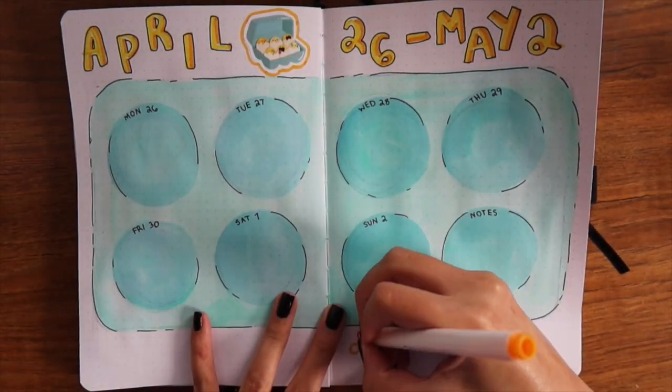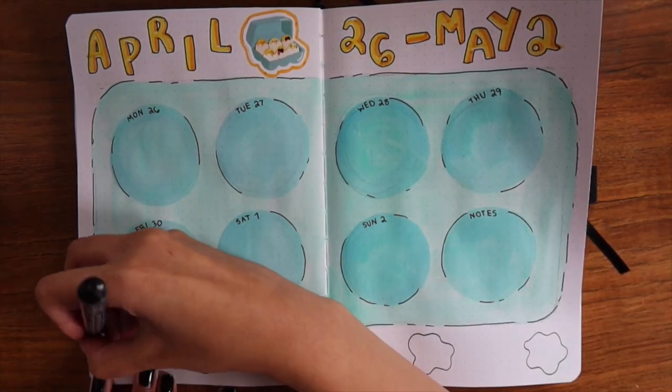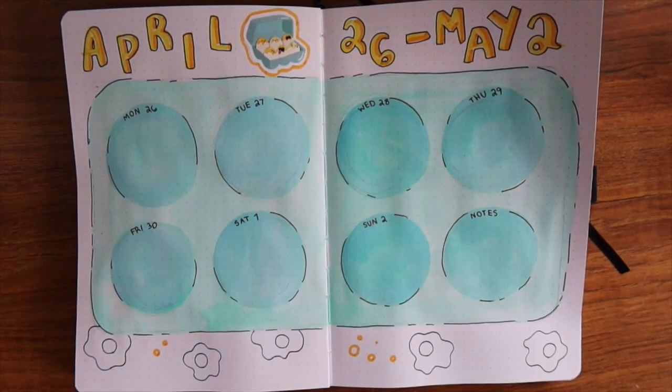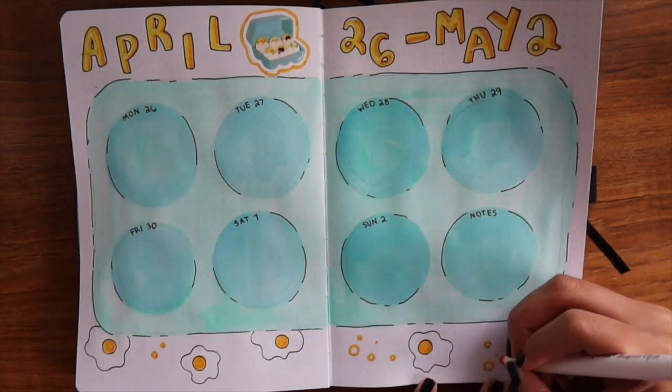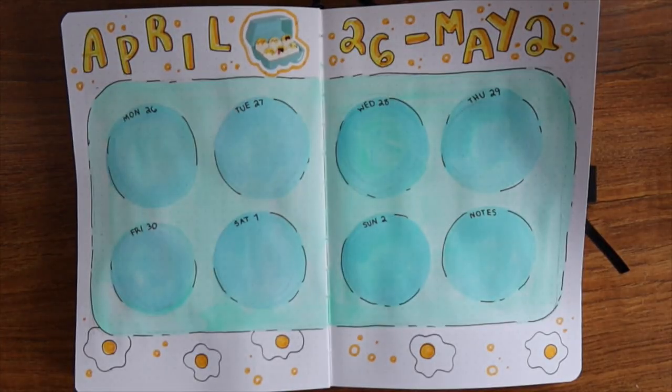On the top of it, I included the words April and May, so this week is April 26 through May 2nd. On the bottom, I just kind of decorated the empty space by adding a bunch of different eggs and these orange circles. This is what the last week ended up looking like.